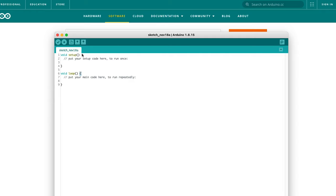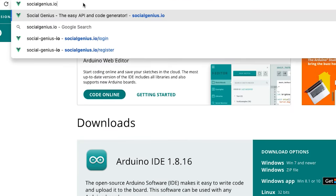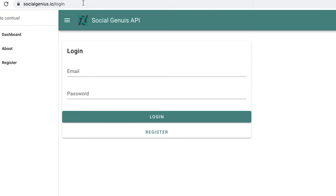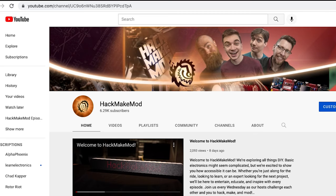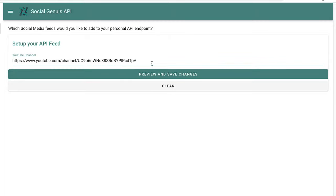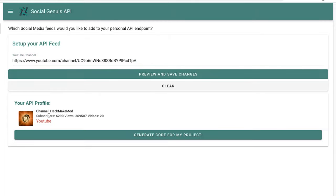So now we have a brand new empty sketch ready. Now we want to go over to socialgenius.io. Go ahead and register an account here. I already have an account registered, so I'm just going to go ahead and log in. Then you want to go to your YouTube channel, get the link up in the URL, and paste that in here. Preview and save changes. And right here it shows you, it pulls your profile. And then you want to hit generate code for my project.